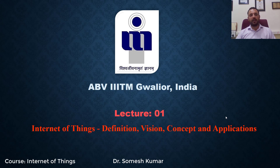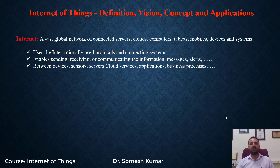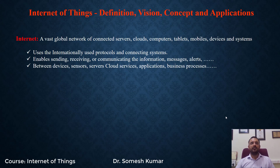It is important to exactly understand what we mean by Internet of Things. Basically, Internet of Things consists of two words — first is Internet, second is Things. Internet is a vast global network of connected servers, clouds, computers, tablets, mobiles, devices and systems. All these devices are connected with the help of one global network that is called the Internet.